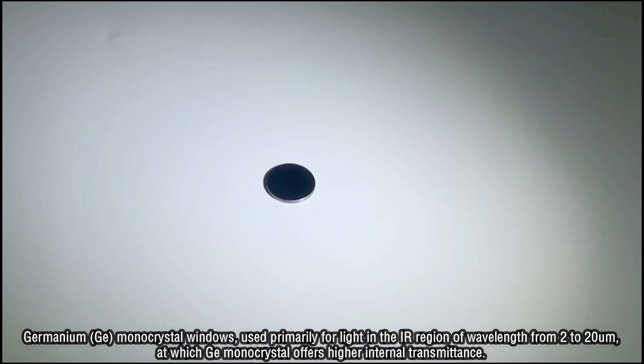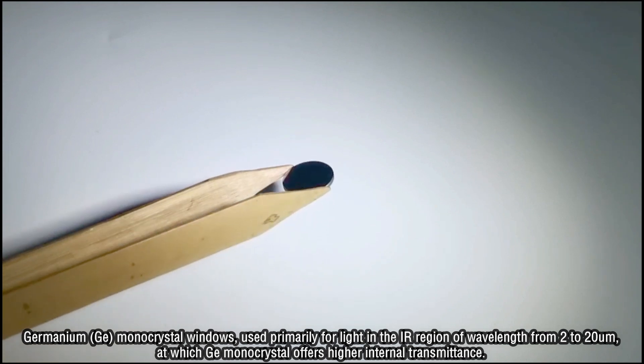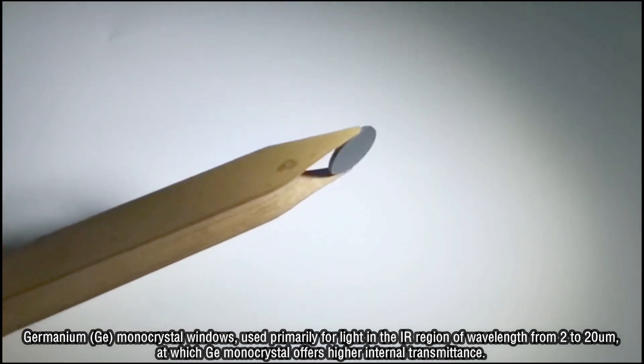Germanium (Ge) monocrystal windows used primarily for light in the IR region of wavelength from 2 to 20um, at which Ge monocrystal offers higher internal transmittance.